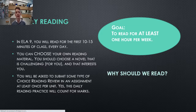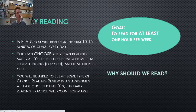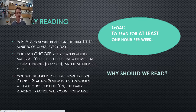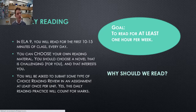You will be asked to submit some type of choice reading review in an assignment on Canvas at least once per unit. For example, right at the start of unit one — Writing to Express and Reflect — I'm asking you to submit in a text box, a recording, or a photo of your notebook a little free write where you've described the first book you've chosen, why you've chosen it, and set a little goal for yourself. The main goal for daily reading is to read for at least one hour per week. If you're working on ELA every day Monday to Friday, that works out to just over 10 minutes — about 12 minutes of reading each day. So it's really not that much.